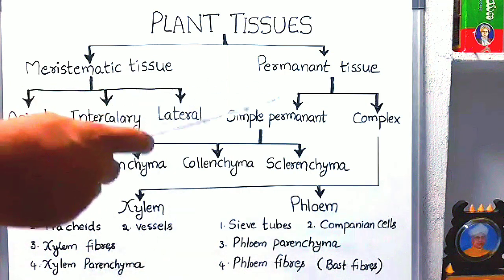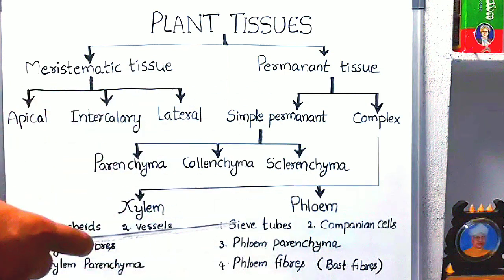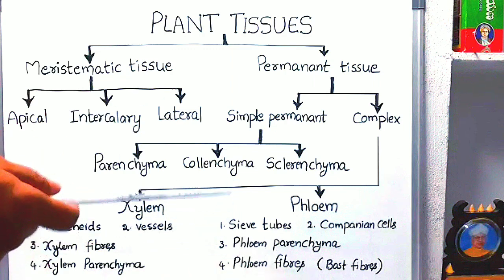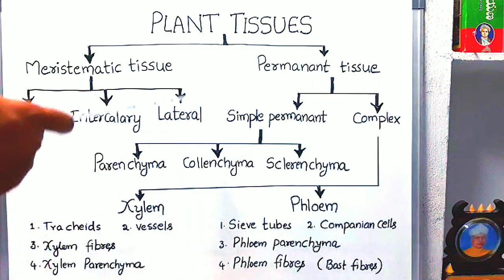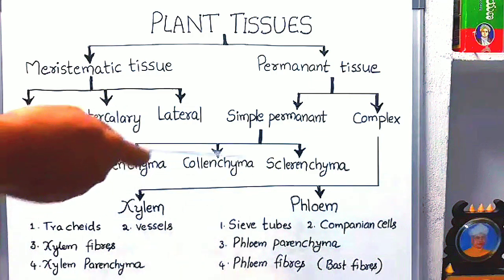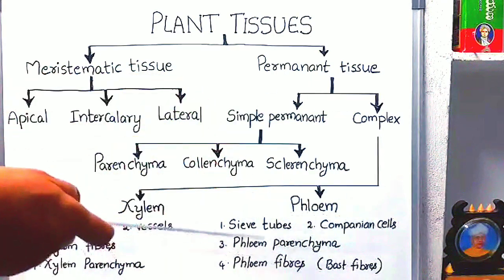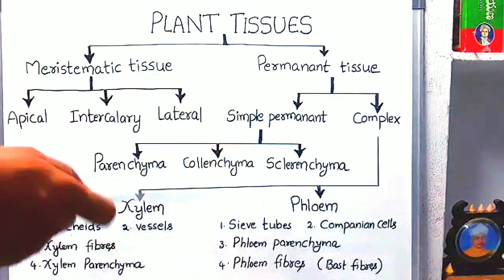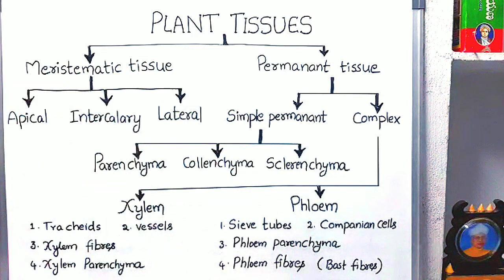So this is the overall idea about plant tissues. In the next class, we will discuss in detail about each and every tissue — that is, meristematic tissue separately and simple permanent tissues and complex permanent tissues in detail with the help of diagrams. I hope you understood this concept of plant tissues. Thank you.